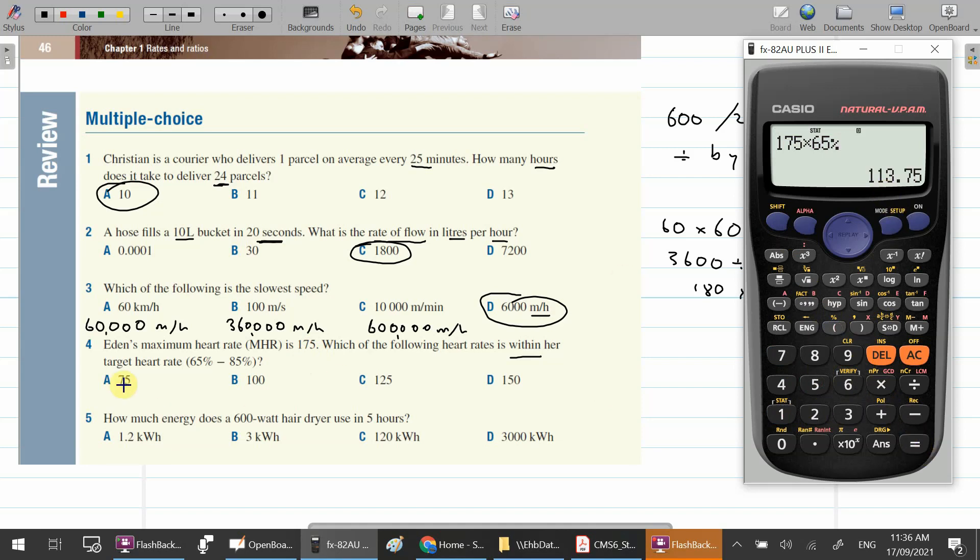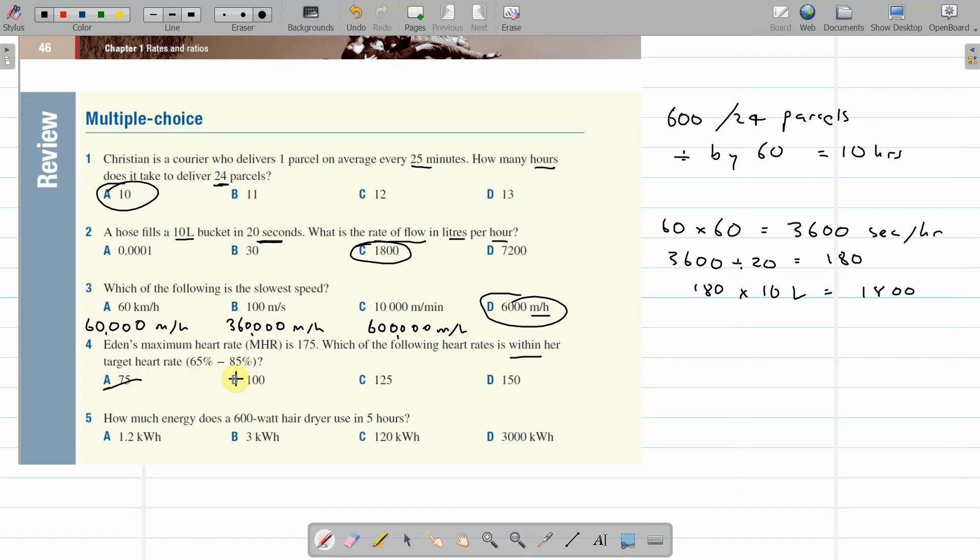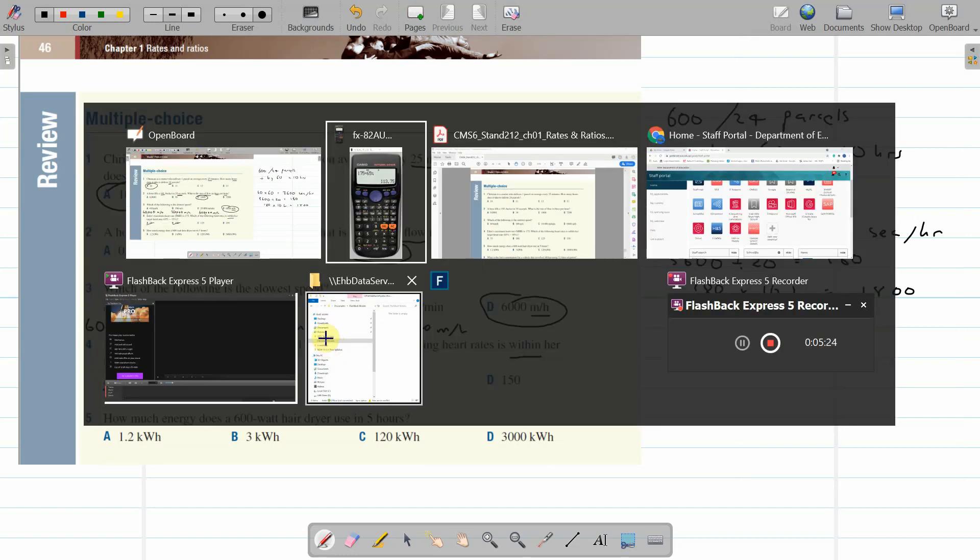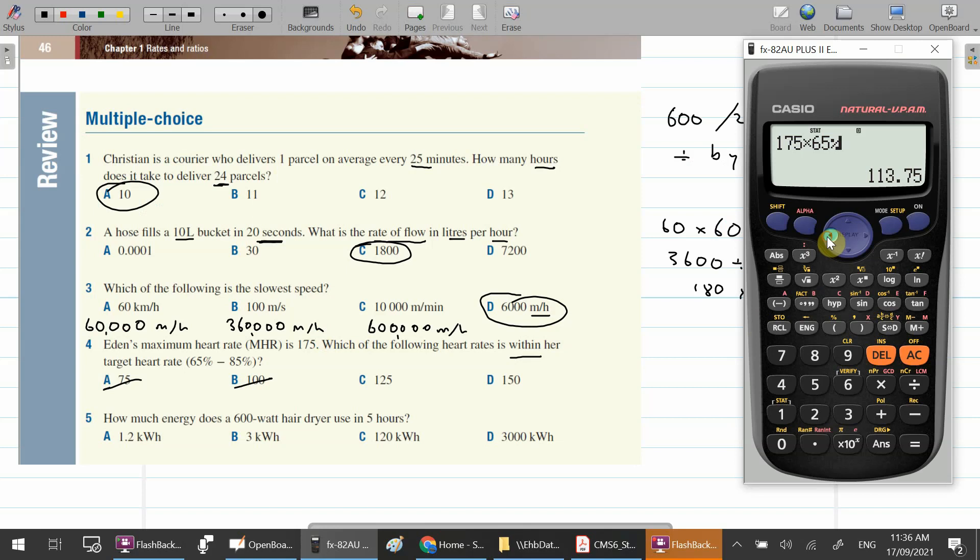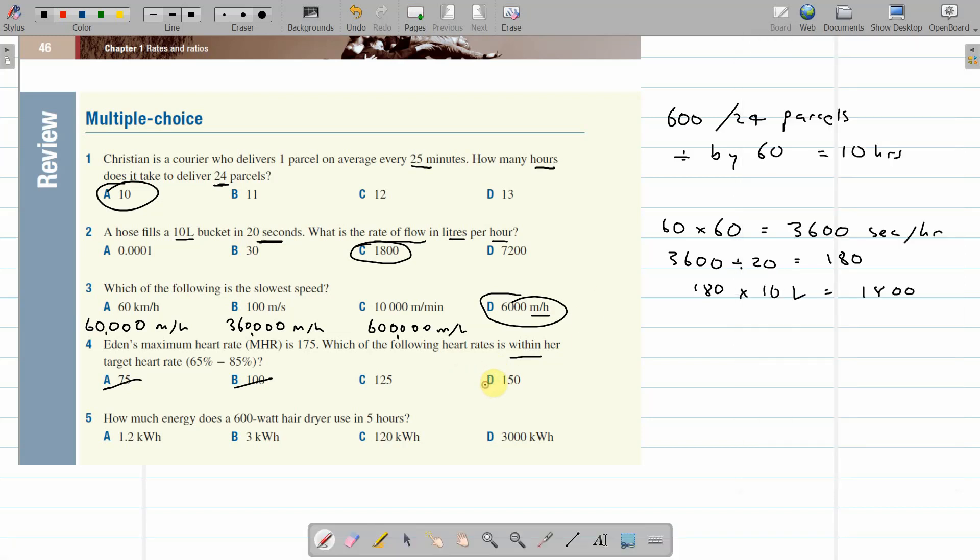Now I've got to find the upper end. 85% of that is the upper end, 148. That one's well out because that's too high. So that's the answer. That's the one that's within the 65 to 85%.